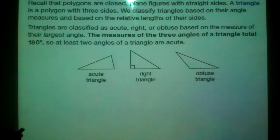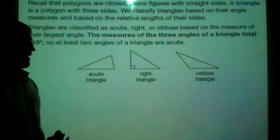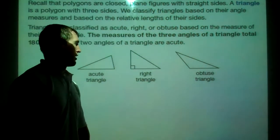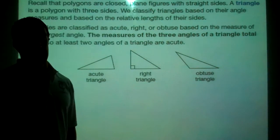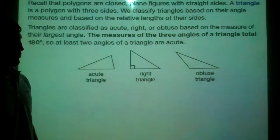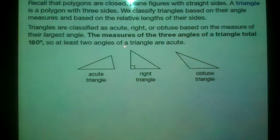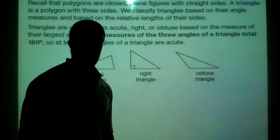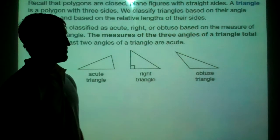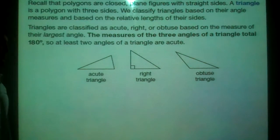We can classify triangles by their angles and we can also classify them by their sides. First we'll look at the angles. The measures of the three angles of a triangle total 180 degrees, so at least two angles of a triangle are acute — at least two of them are less than 90 degrees. That has to be true for it to be a triangle.